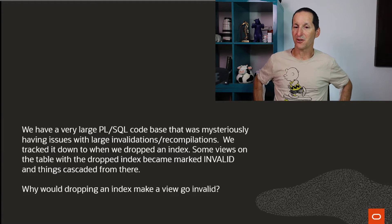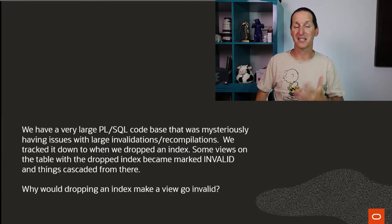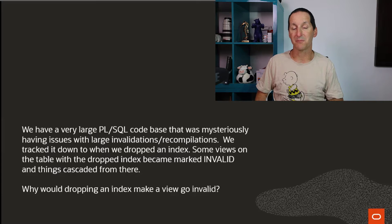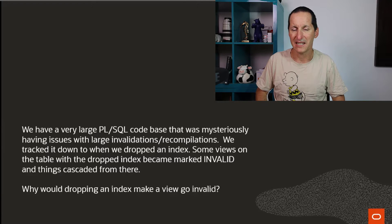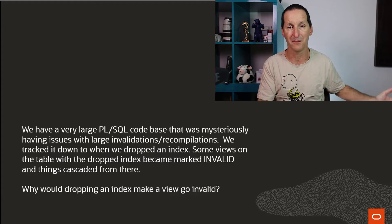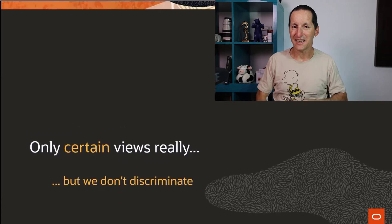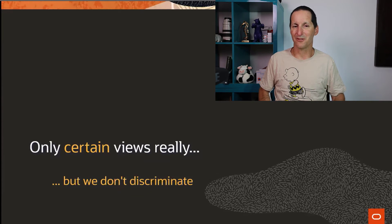A friend named Jock posed this via email. Funnily enough, it's actually in the documentation — the docs say if you drop indexes, then views may become invalid, but doesn't explain why. This led to investigation as to why dropping an index on a table would make a view on that table go invalid, because the view definition hasn't changed and none of the columns have changed.